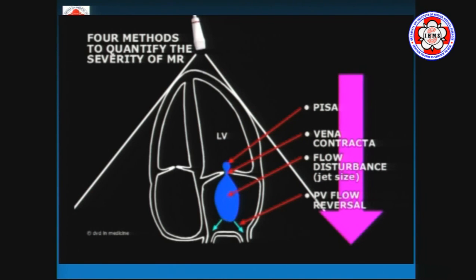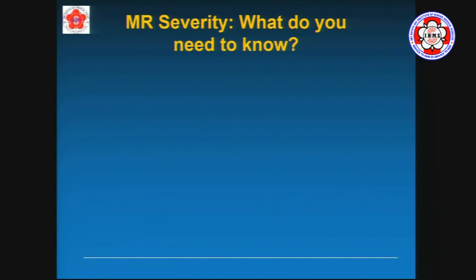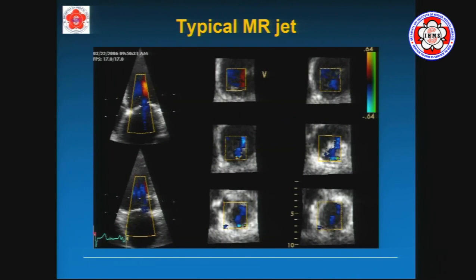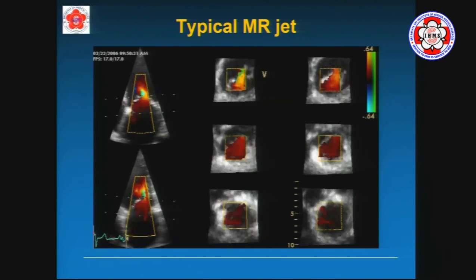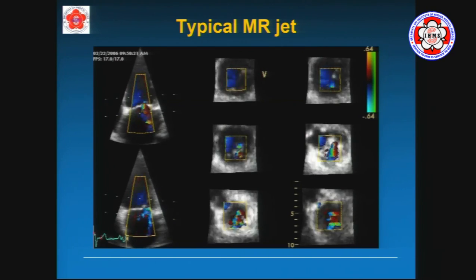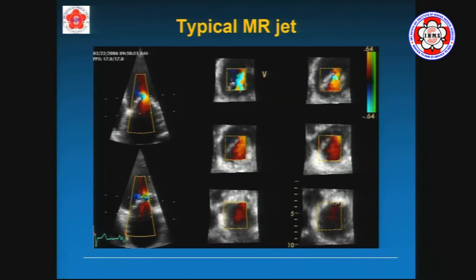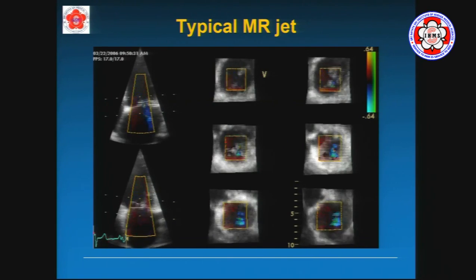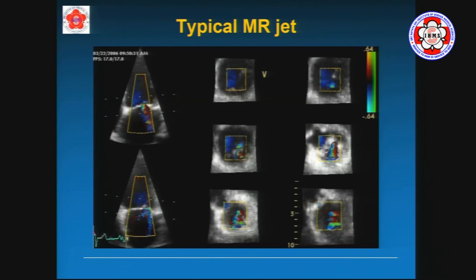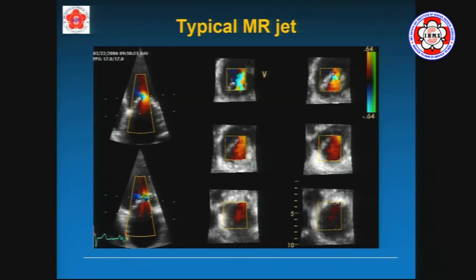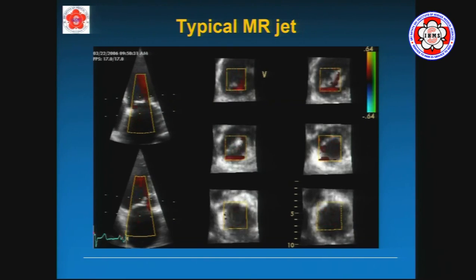When we quantify mitral regurgitation, all three of those components can be used to give you the grading — whether it's 1+, 2+, 3+, or mild, moderate, severe. We can do all sorts of things when we look at a particular type of valve. Here's an example of the apical four-chamber view showing a biologic regurgitation jet. And if we do 3D echo, we can actually slice this in different settings to show it across in different formats.